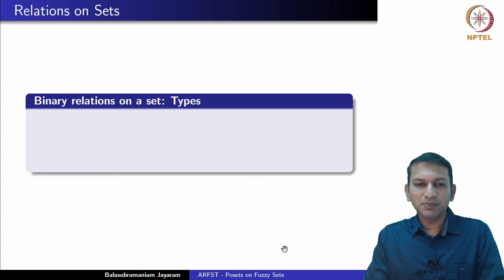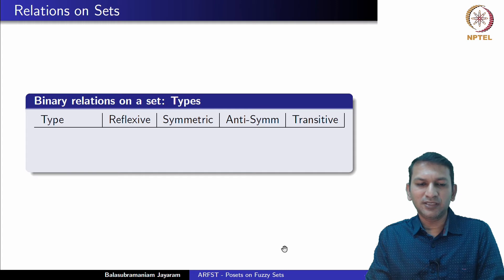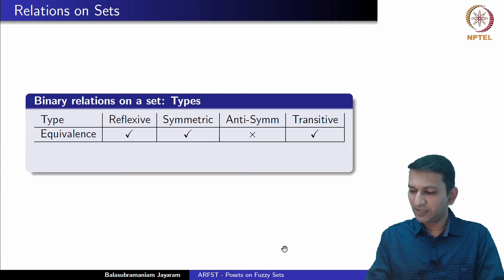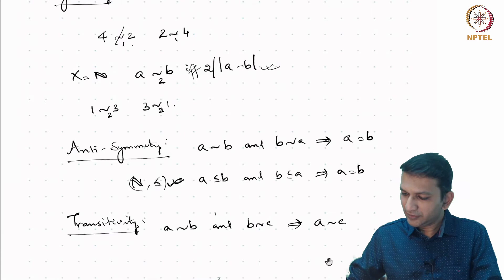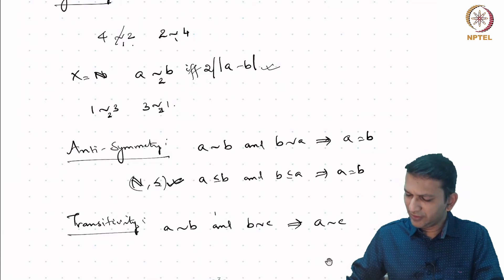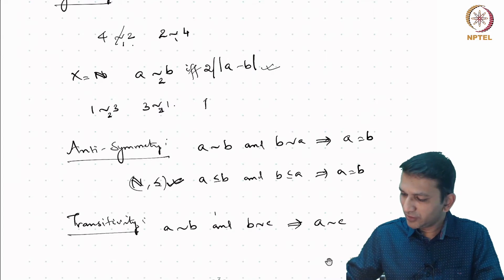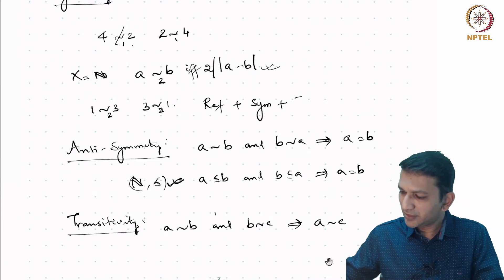There are different types of binary relations. For instance, if a binary relation is reflexive, symmetric, and transitive, we call it an equivalence relation. Consider the relation on the set of natural numbers where a is related to b if and only if 2 divides |a − b|. It can be clearly shown that it is reflexive, symmetric, and transitive, so this is actually an equivalence relation.